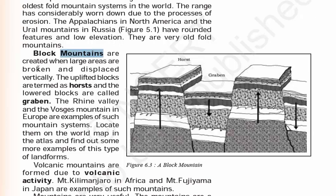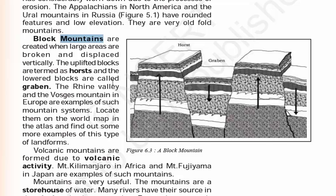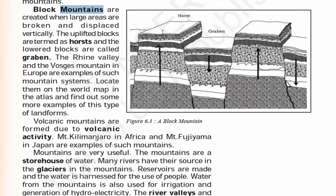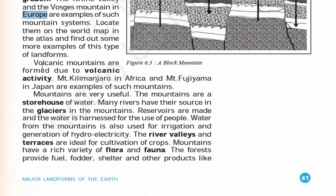Block mountains are created when large areas are broken and displaced vertically. If you look at the picture, you can see how some land masses are going down and some are going up, forming a block sort of structure. Most such examples are found in Europe, where the mountain systems show a lot of block mountains. Coming to volcanic mountains, they are formed due to volcanic activity. A fine example would be Mount Kilimanjaro in Africa and Mount Fujiyama in Japan.